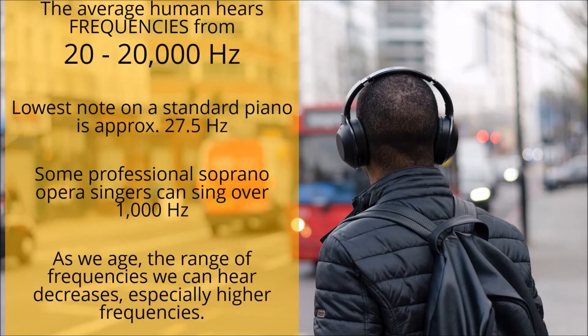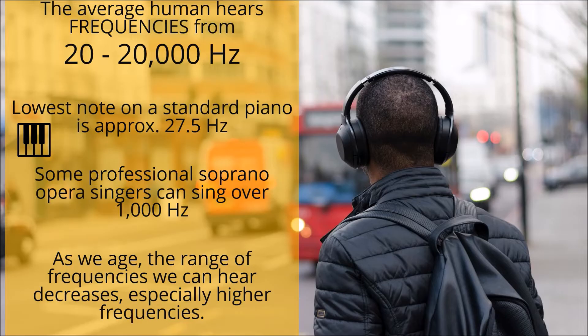The average human hears frequencies from around 20 hertz up to 20,000 hertz. For instance, the lowest note on a standard piano is approximately 25.5 hertz. Some professional soprano opera singers can sing over 1,000 hertz. As we age, the range of frequencies we can hear decreases, especially higher frequencies.